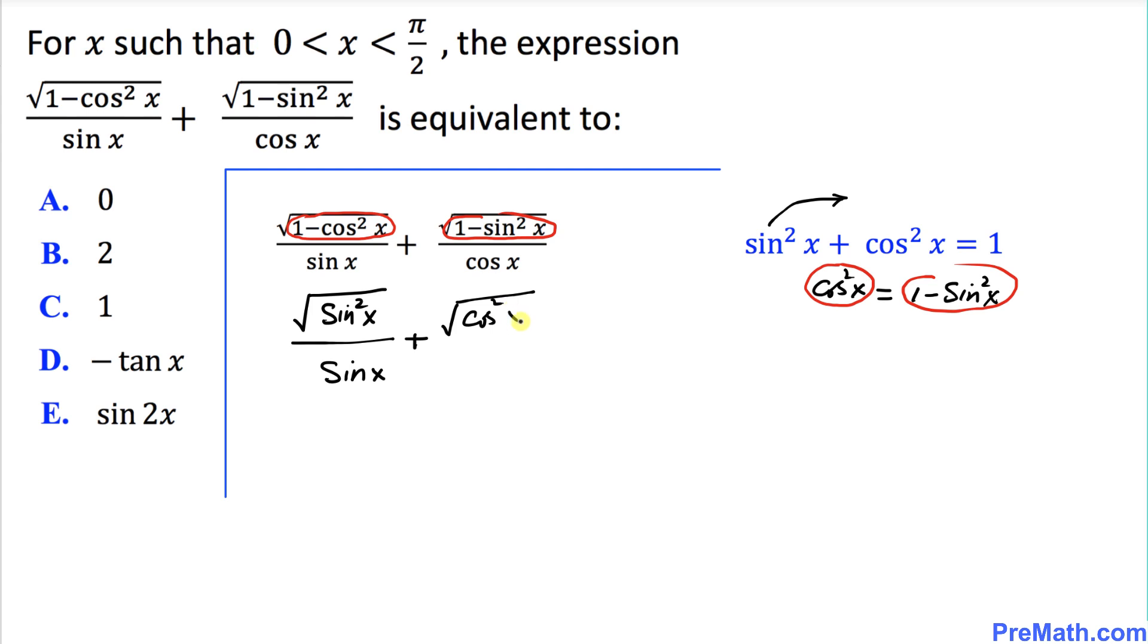Now as we can see, this square cancels out with the square root, and likewise this square cancels with the square root. So we end up with sin x divided by sin x plus cos x divided by cos x.